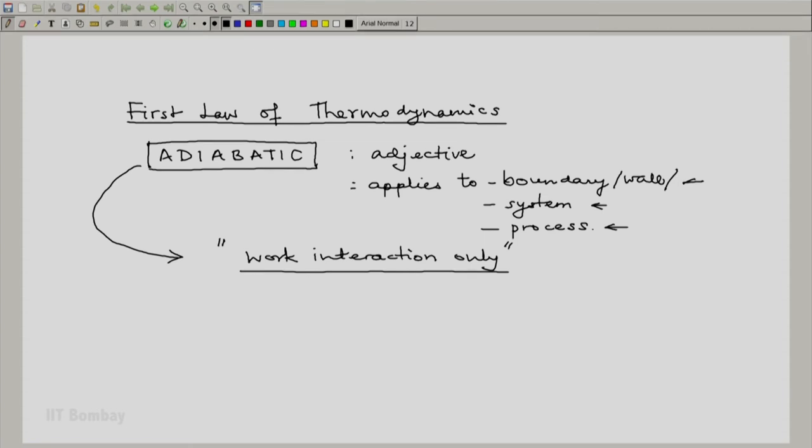So this way we will notice that the adjective adiabatic can be applied to a boundary, a wall or an interface, can also be applied to a system, can also be applied to a process. It is a restrictive adjective which means one that permits work interaction only or one during which like a process only work interaction takes place.